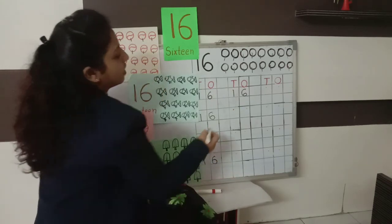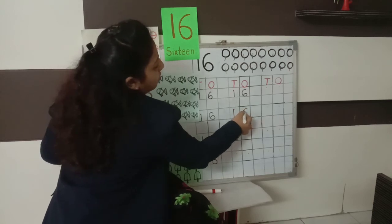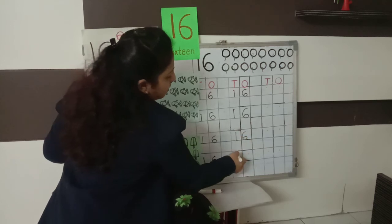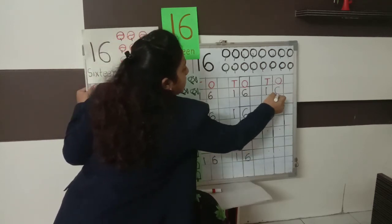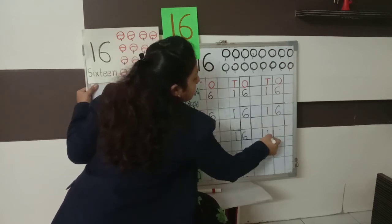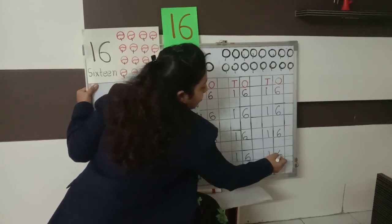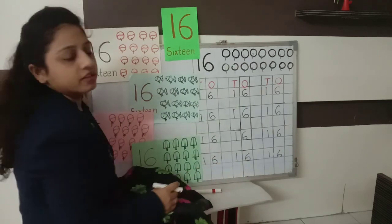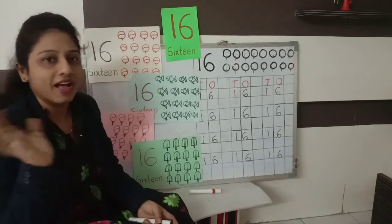And we are going to write number 1-6, 16. We are going to write number 16 in our books. 16, 1-6, 16. You can write it in your book, okay? Writing. Okay? I am going to show you the picture. Bye-bye.